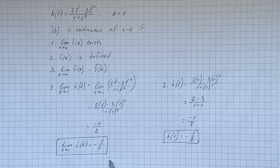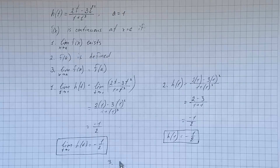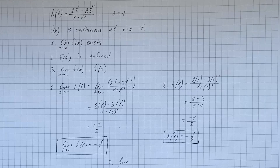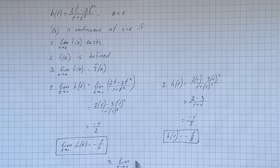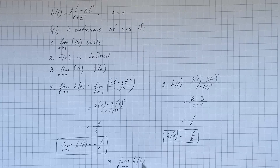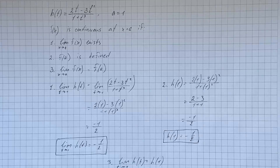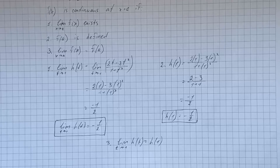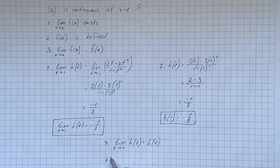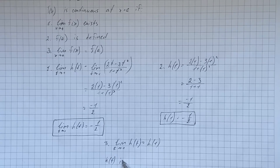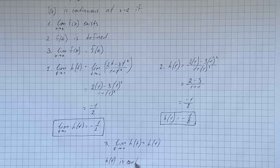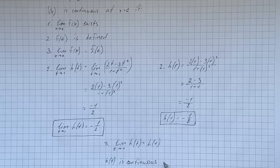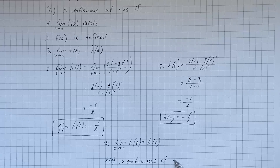The last condition is that the limit as t approaches one of h of t equals h evaluated at one. Since both equal negative one-half, all three conditions are satisfied, and therefore the function h of t is continuous at a equals one.